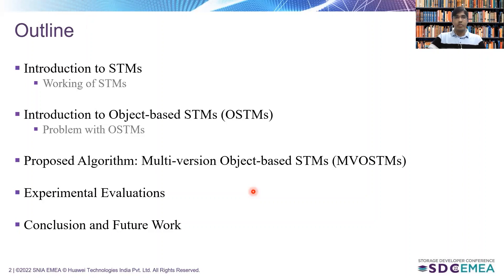This is the outline of today's presentation. First, I'll talk about introductions to software transactional memory systems, in which we will see the working of STM methods. Then, I'll talk about introductions to object-based software transactional memory systems, where we will discuss the problems with object-based STM. In the next sections, we will see how we overcome those problems and propose a new innovative algorithm called the multiversion object-based software transactional memory system. From that section onward, Shweta will explain our proposed algorithm. Then, we will talk about experimental evaluation, conclusion, and future work.